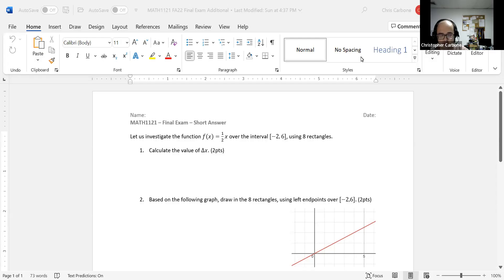With the last question of our final exam review, let us investigate the function f of x equals one half x over the closed interval from negative 2 to 6 using 8 rectangles. We first want to find delta x.